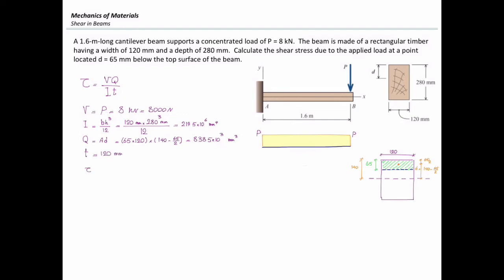Now the value of shear stress is calculated in this way: 8,000 N, which is V, times Q, which is 838.5 times 10 to the third, divided by IT. And I is 219.5 times 10 to the sixth. The thickness is 120 millimeter.